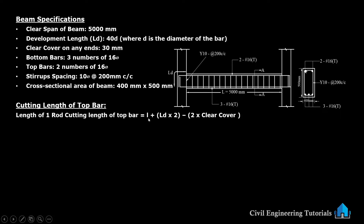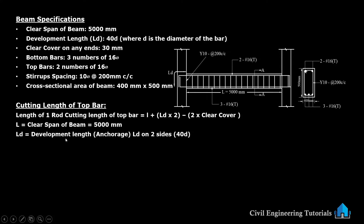The formula is: L plus LD into 2 minus 2 into clear cover. L is the clear span, 5000 mm. LD is 40D, where D is the diameter of the bar, into 2 for both sides. Minus 2 into clear cover, which is 30 mm. So we will put all values. Clear span of beam: 5000 mm. Development length LD on both sides: 40D, so 40 multiplied by 16 mm diameter.